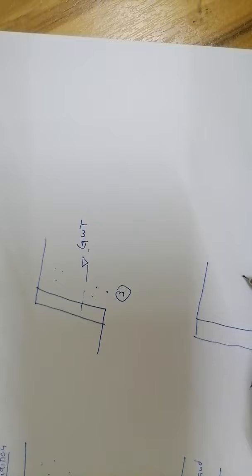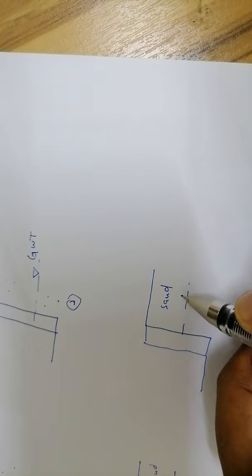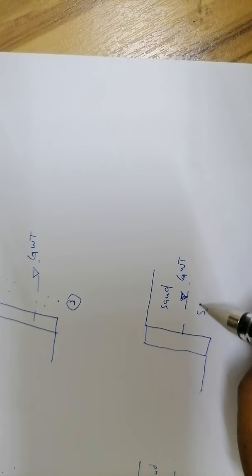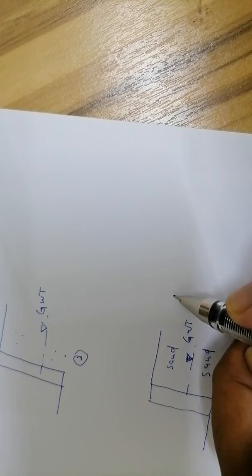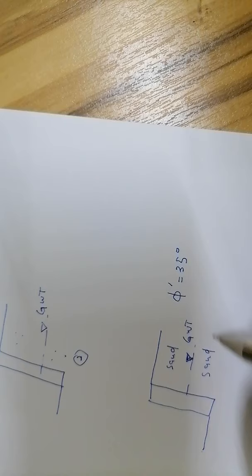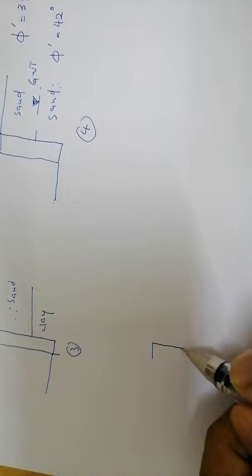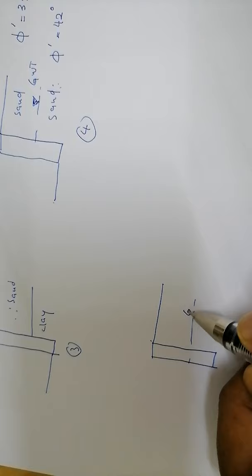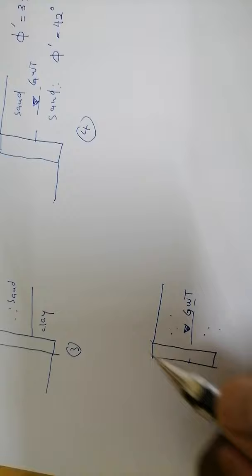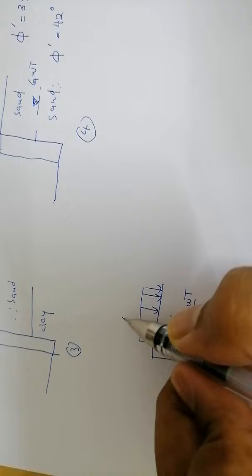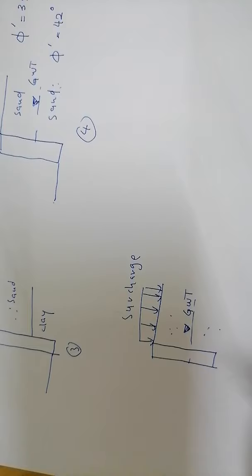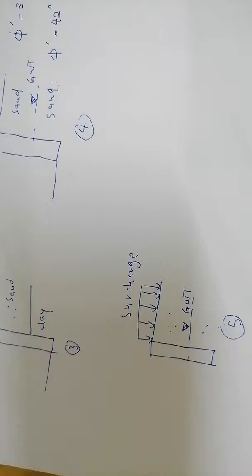Another case involves a retaining wall with groundwater and two layers of sand, but with different properties — for example, friction angle of 35 degrees for the first layer and 42 degrees for the second. This will give different values. Condition four: you have a retaining wall with groundwater, two layers of sand, and additionally a surcharge force at the top. This surcharge will affect all the forces you calculate.